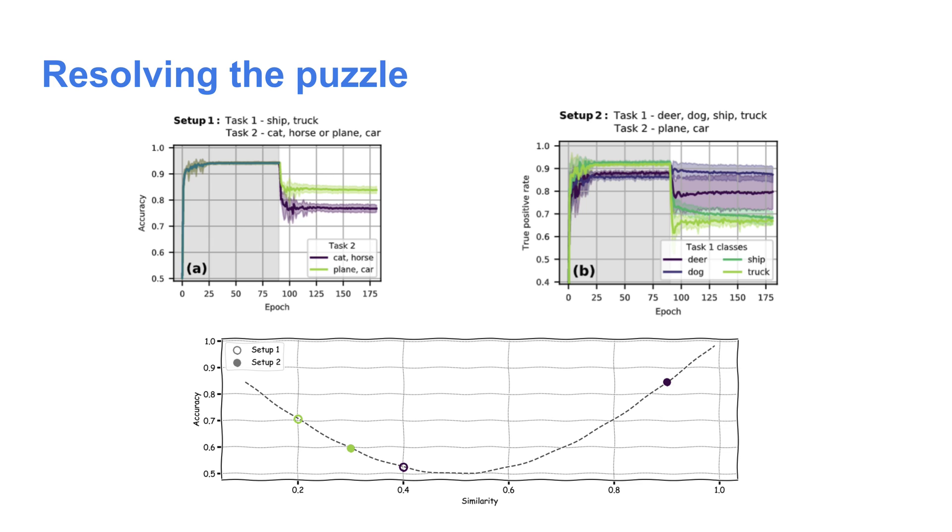But in setup two, with the initial four-class classification, here there was pressure on the model to represent animals and vehicles differently. So now training on vehicles didn't affect the orthogonal animal representation as much, but it did affect the less orthogonal vehicles representations quite a bit.